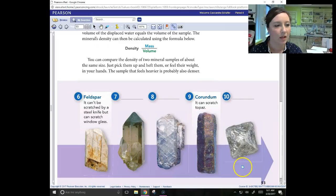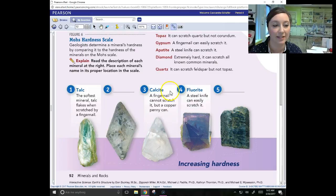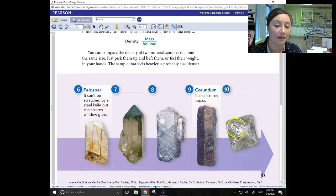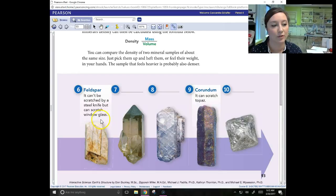Mohs chose some of the most common minerals at each hardness level for his scale. Talc is just a very common mineral. The softest mineral, talc, flakes when scratched by fingernails. We see that 1 is the softest, 10 is the hardest. We have calcite at 3, so a fingernail cannot scratch it but a copper penny can. Fluorite is a 4. Feldspar at 6 can be scratched by a steel knife but can scratch window glass. And then corundum can scratch topaz.